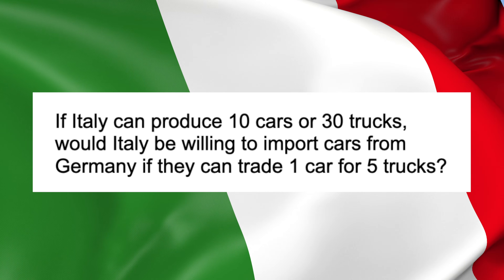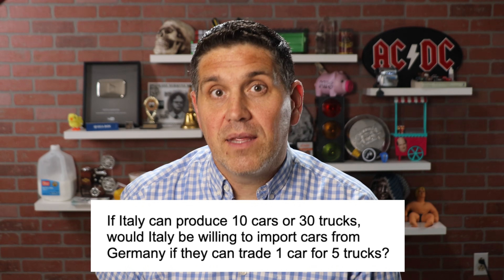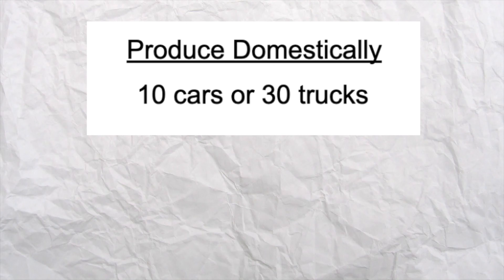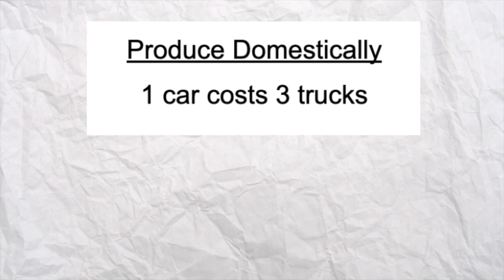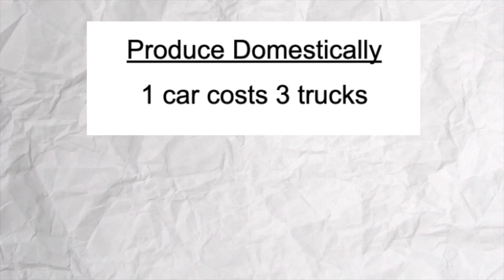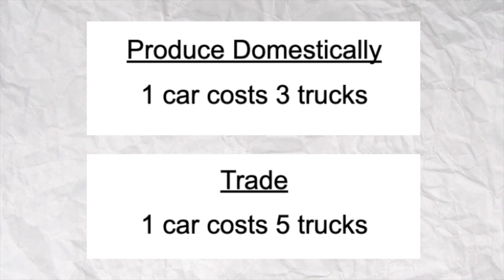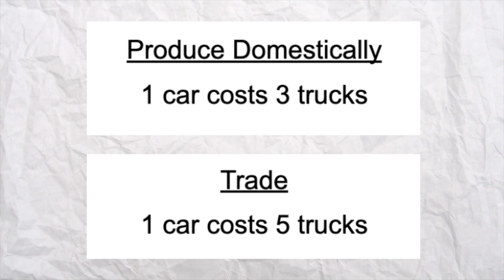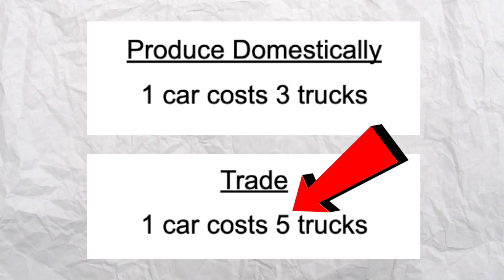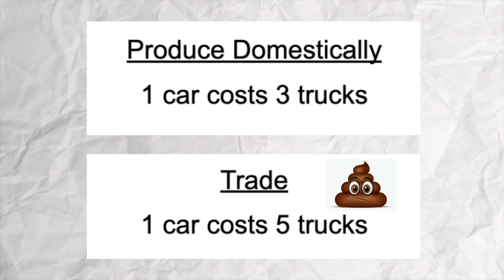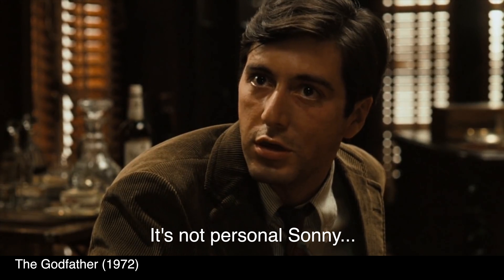All that said, the answer is no — Italy would not accept those terms of trade. The first thing you have to do is calculate per unit opportunity cost. We know it's 10 cars for 30 trucks, so each one car costs three trucks for Italy. That's the opportunity cost if Italy produces cars themselves. Now compare that to the terms of trade: one car for five trucks. If Italy produces cars themselves it costs them three trucks, but if they trade it's gonna cost them five trucks to get one car. It's a bad deal — they're not gonna take it.